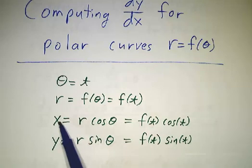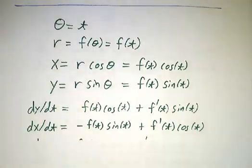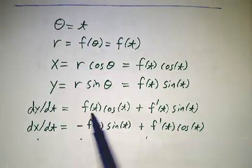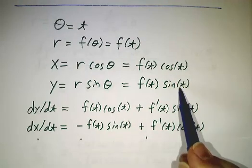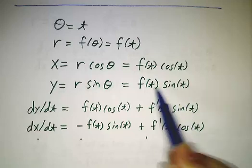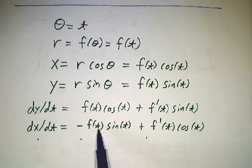Now that we've got x and y as functions of t, we can take the derivatives. The derivative of y is f(t) cos(t), since derivative of sin is cos, plus f'(t) sin(t), just by the product rule.